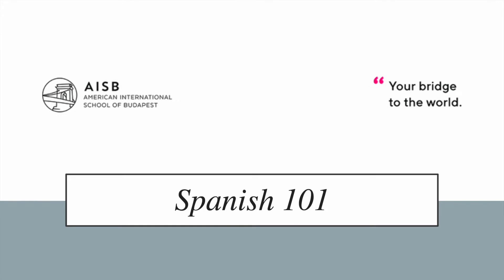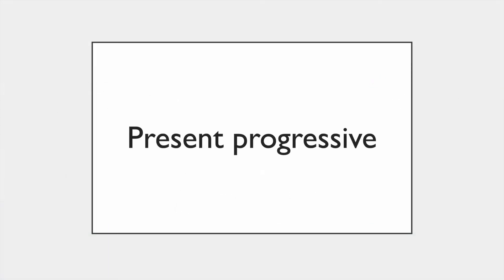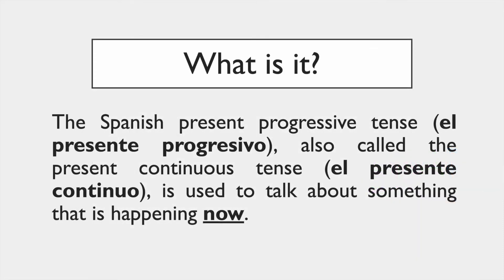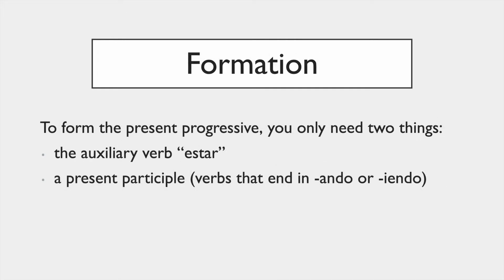Welcome to Spanish 101. This video is about the present progressive — what is it? The 'presente progresivo' or 'presente continuo' is used to talk about something that is happening now. To form it, just do two things: first use 'estar,' and use the present participle.